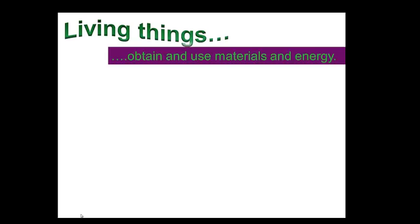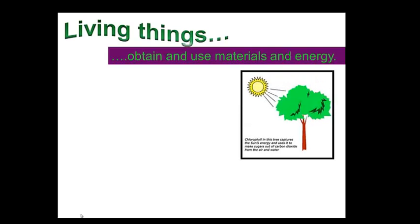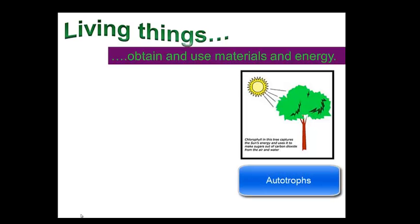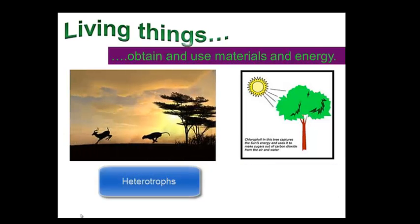Living things obtain and use materials and energy. Plants are autotrophs, or self-feeders — organisms that make their own food and get energy from that food. They take sunlight and convert or transform that sunlight into energy that the plant can use. While animals are heterotrophs and they feed on other plants or animals to obtain that energy. Thus they transform energy to run their metabolic processes.